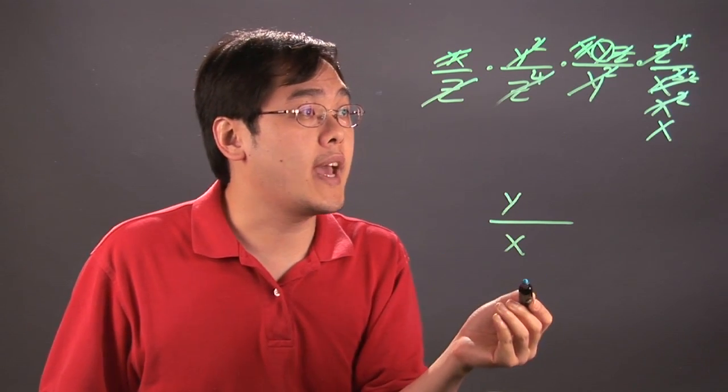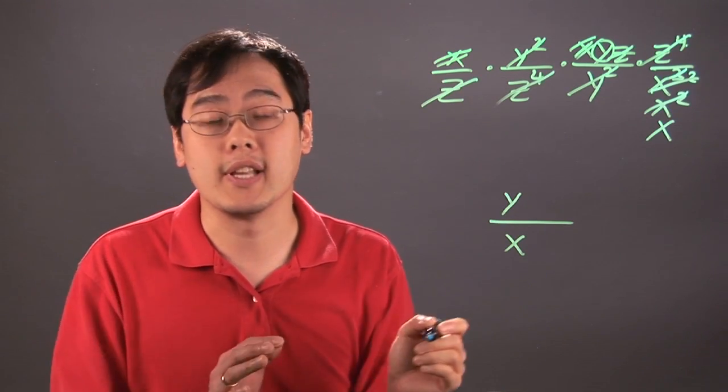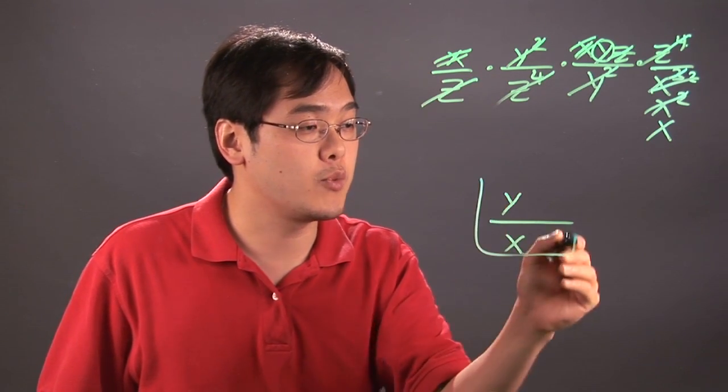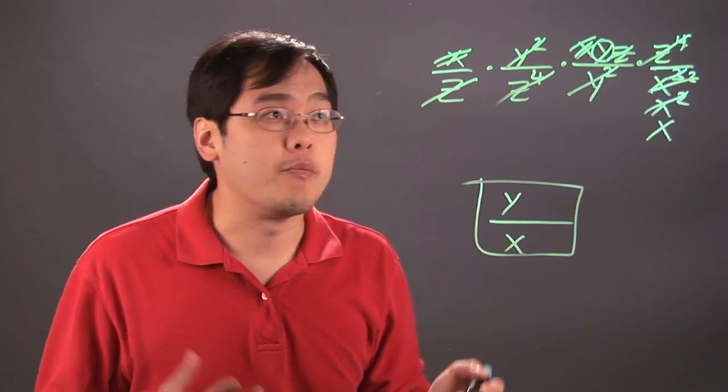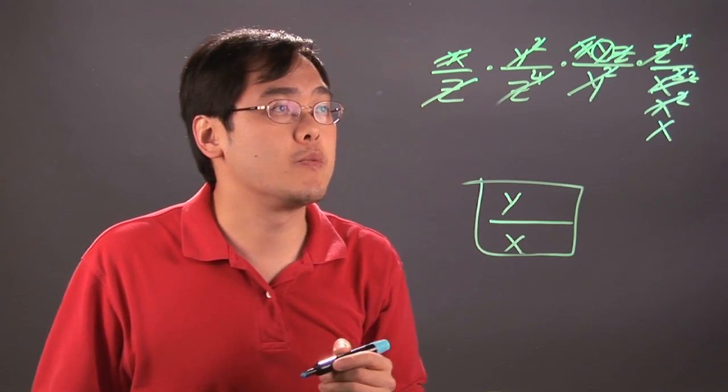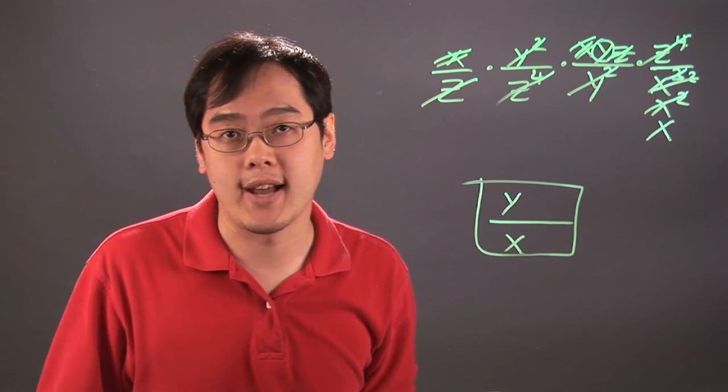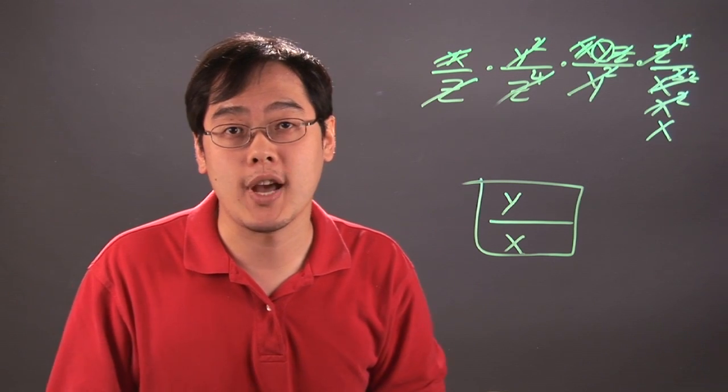So in this particular case, one variable is completely eliminated. So when you multiply those four expressions, you're actually left with y over x. Now, the other option would have been if you chose to multiply all the terms across for the numerator and denominator and cancel after the fact.